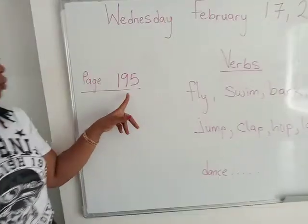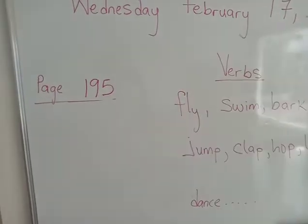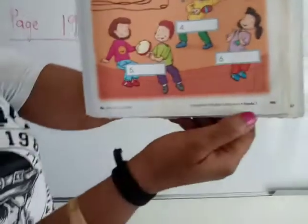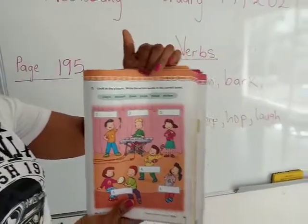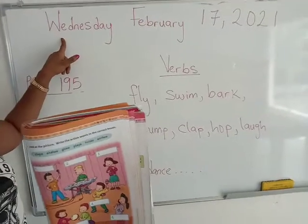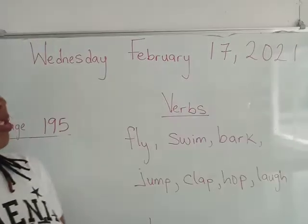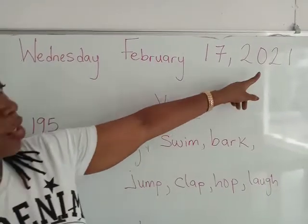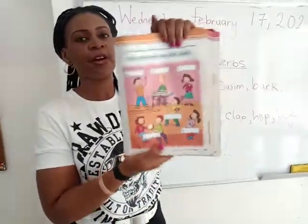When you're done with that, get your workbook and turn to page 195 — you'll find that in the orange pages. Write the date: Wednesday, February 17, 2021. And this is a fun activity for you.